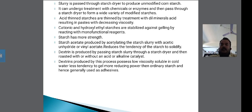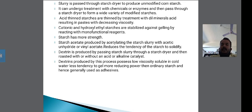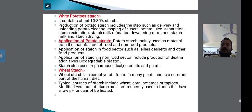Dextrin is produced by passing the slurry through the starch dryer and then roasting it with or without an acid or alkaline catalyst. The dextrin produced by this process has low viscosity, is soluble in cold water, has less tendency to gel, and has more reducing power than ordinary starch. It is hence generally used as an adhesive.